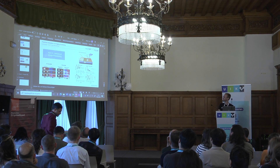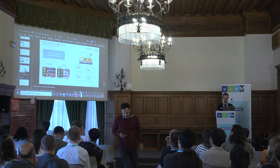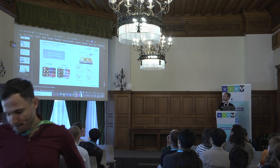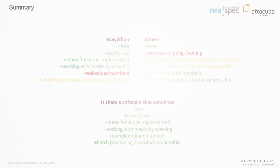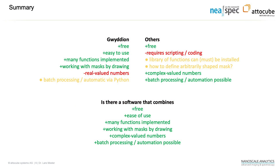I'm already at the end of all these slides. I want to compare different ways of processing data. Gwydion is free and easy to use, many functions are there — statistical analysis and different things. What I like a lot is to work with masks by just drawing on the image to include or exclude certain areas. These are the pros of Gwydion. But we cannot use complex numbers, which for some samples is a problem.